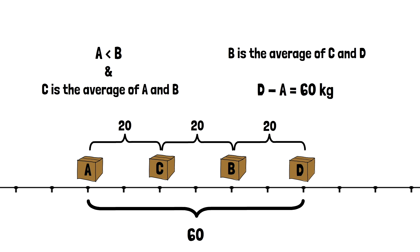So the answer is, the difference between box B and box C is 20 kilograms. I hope you enjoyed this video. Don't forget to like and subscribe and comment down below if you have any questions.